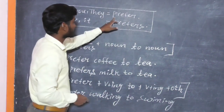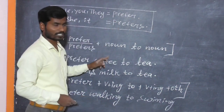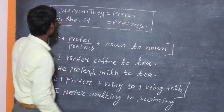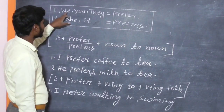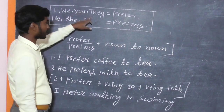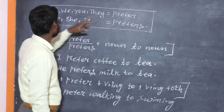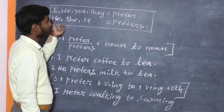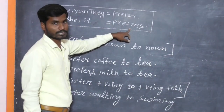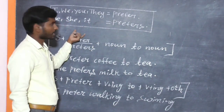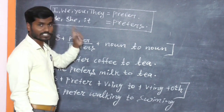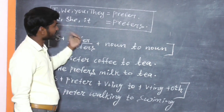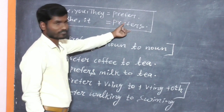Today we are going to learn how to use PREFER in English sentences. If the subject is I, we, you, or they, you need to write PREFER. If the subjects are he, she, or it, you need to write PREFERS. Any person's name — for example, if Arun comes, we need to write PREFERS. Arun or Priya — any boy's name or girl's name, we use PREFERS.